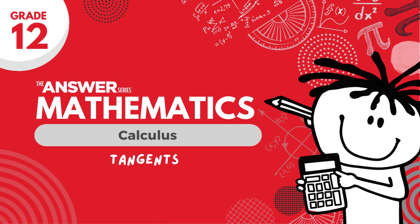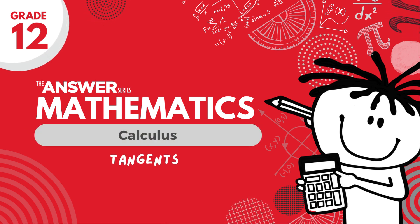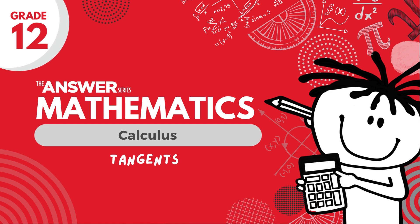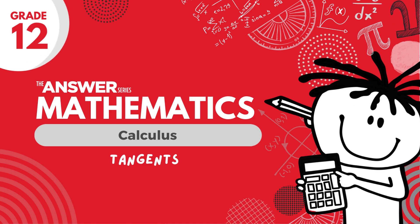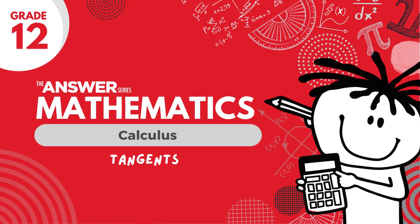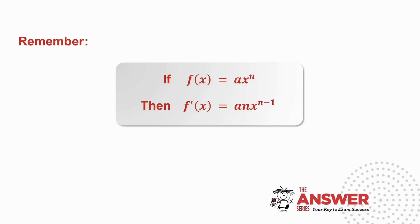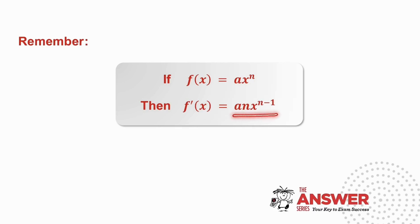Hello, and welcome to the seventh video on calculus brought to you by The Answer Series. In this video we will be looking at tangents. Remember from the previous video, if f of x is equal to ax to the n, then the derivative f dash x is equal to a times n x to the power n minus 1. We're going to be using that extensively in this video.